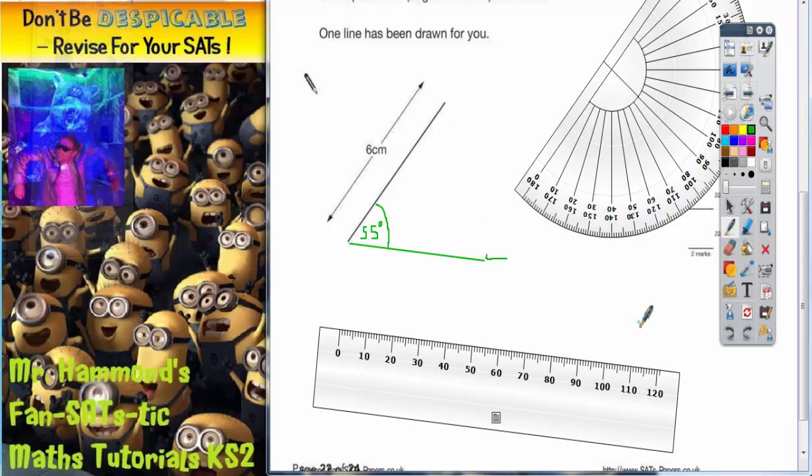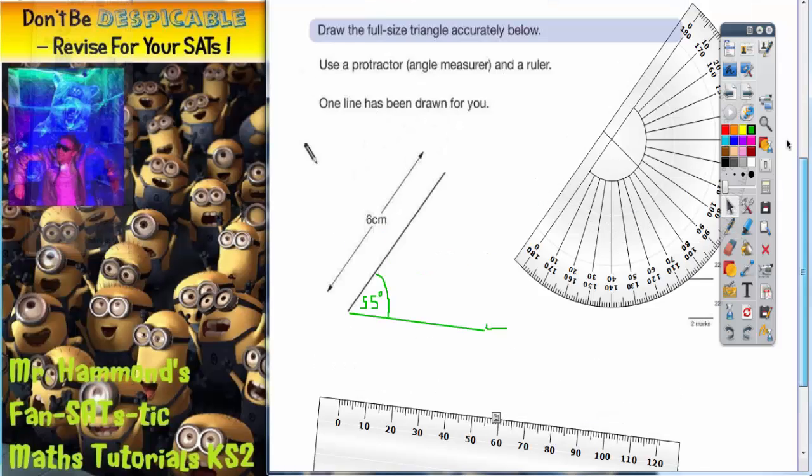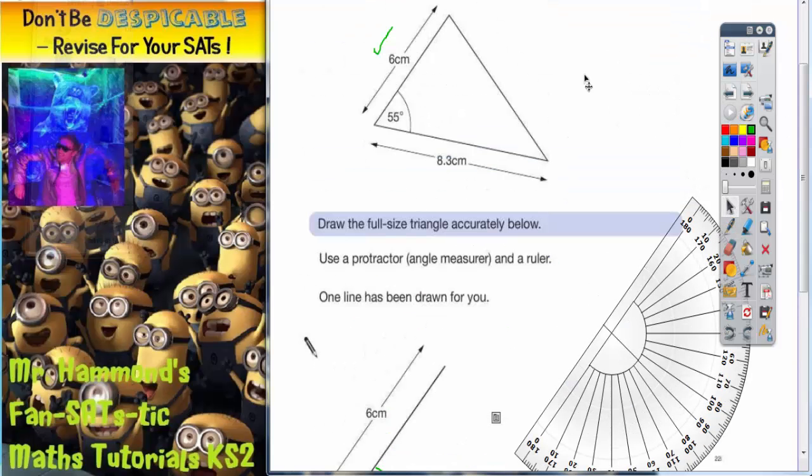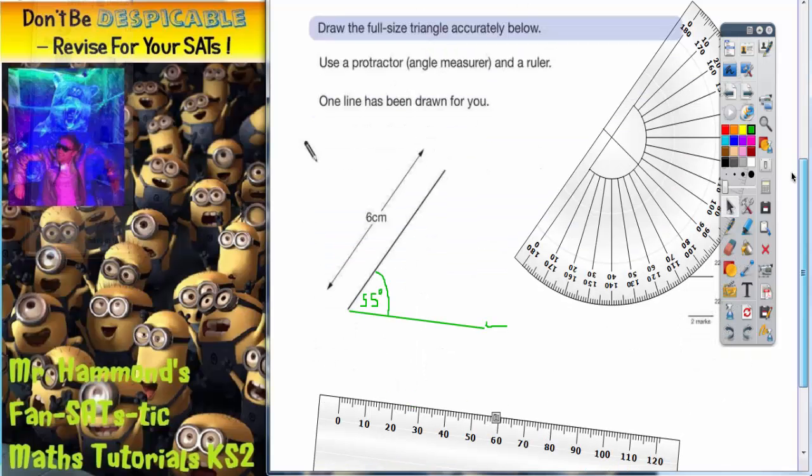Now the line we've already drawn may be long enough, it may be too short, so we've got to test it. It needs to be 8.3 centimeters long, because that's what it says here. So, 8.3 centimeters, get your ruler.